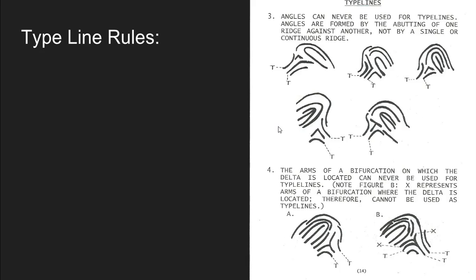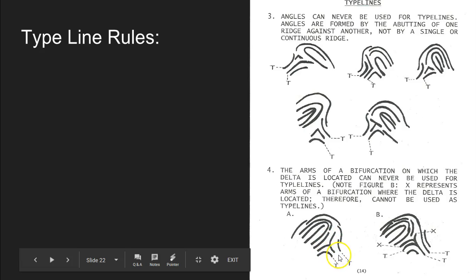Another important rule: the arms of a bifurcation on which the delta is located can never be used for the type lines. Sometimes we have a bifurcation that becomes our delta — remember the delta is the area between the divergence. The arms of that bifurcation can't be used as type lines. So we have a type line here, a type line here, and our delta is the bifurcation point itself.